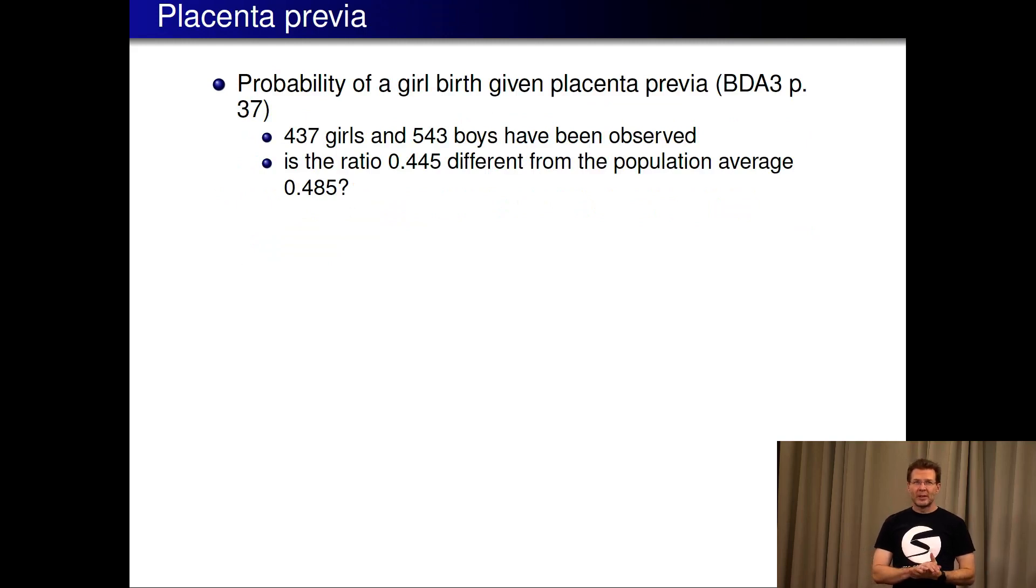This is example from the book: placenta previa, where the fetus has been attached in a wrong place. Based on the observations it seems that this might affect the sex ratio or the probability of girl birth. So we have 437 girls and 543 boys, and on the other hand for lots of other data we have this population average known 0.485. Now we want to know whether this observed ratio 0.445 in case of placenta previa is different from the population average.